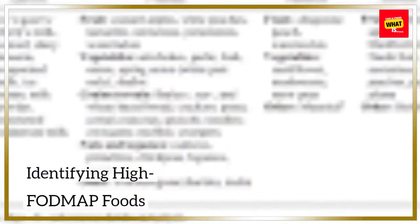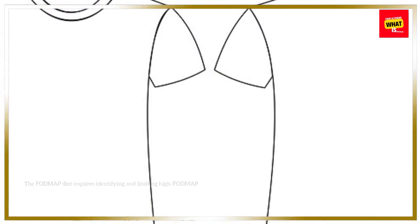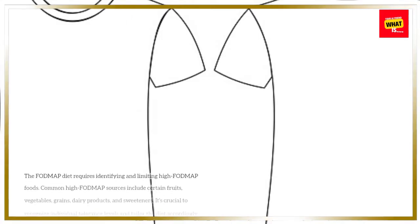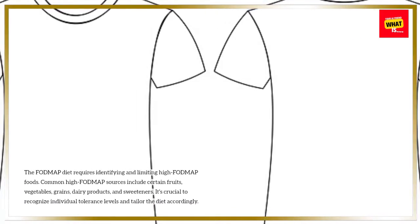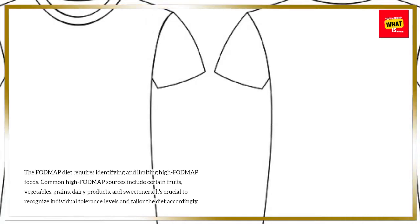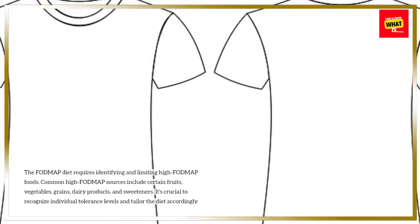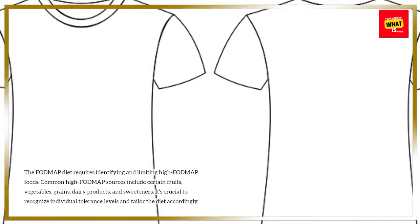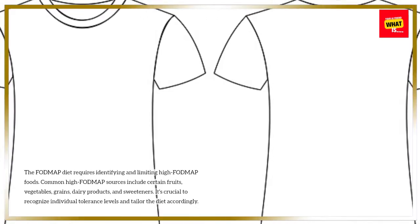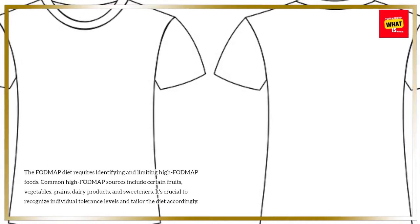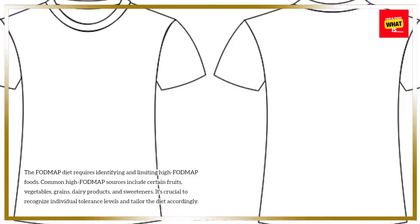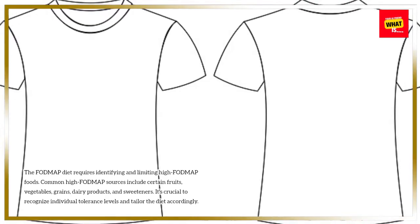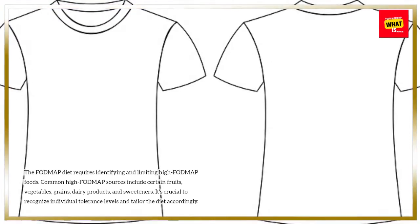Identifying high FODMAP foods. The FODMAP diet requires identifying and limiting high FODMAP foods. Common high FODMAP sources include certain fruits, vegetables, grains, dairy products, and sweeteners. It's crucial to recognize individual tolerance levels and tailor the diet accordingly.